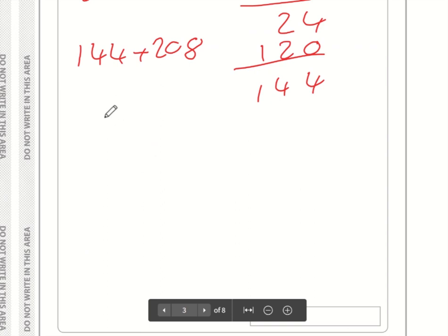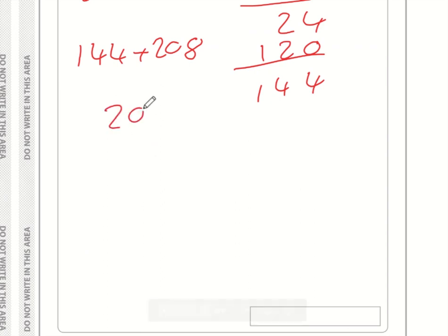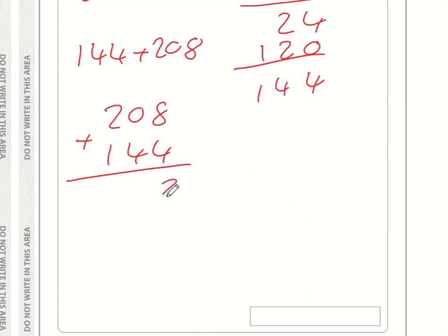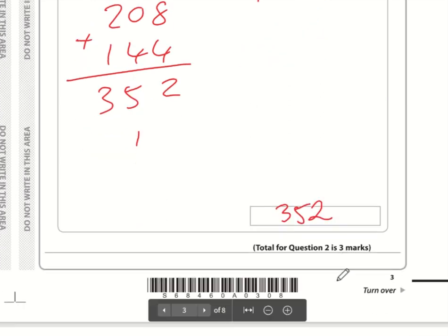So the question is now 144 plus 208. Using column addition: 8 plus 4 is 12, carry 1; 4 plus 1 is 5; 2 plus 1 is 3. So the answer is 352.